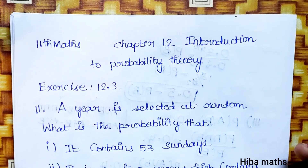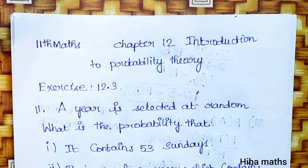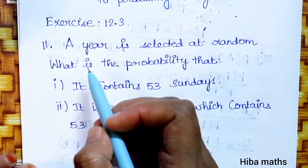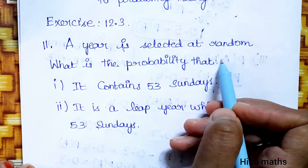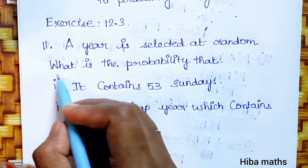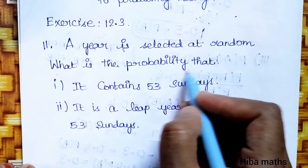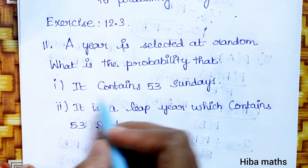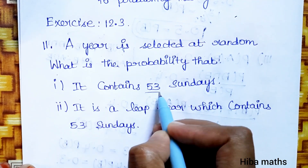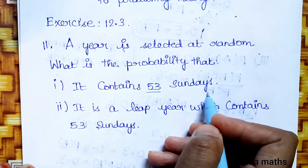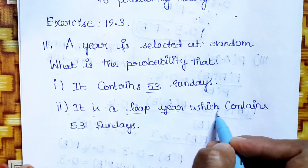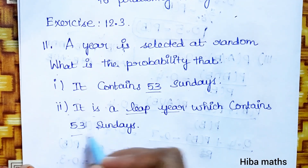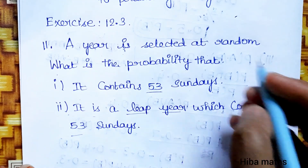Exercise 12.3, 11th question. If we solve it, a year is selected at random. What is the probability that it contains 53 Sundays? Second condition: it is a leap year which contains 53 Sundays.